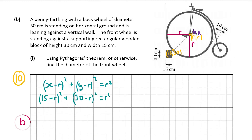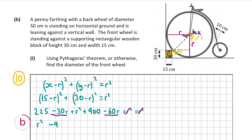Substituting: 15 minus r, squared, expands to 225 minus 30r plus r squared, and 30 minus r, squared, expands to 900 minus 60r plus r squared, and all of that equals r squared. The r squared on the right cancels with one on the left, leaving one r squared. Combining like terms: minus 30r minus 60r gives minus 90r, and 225 plus 900 gives 1125, all equal to zero.